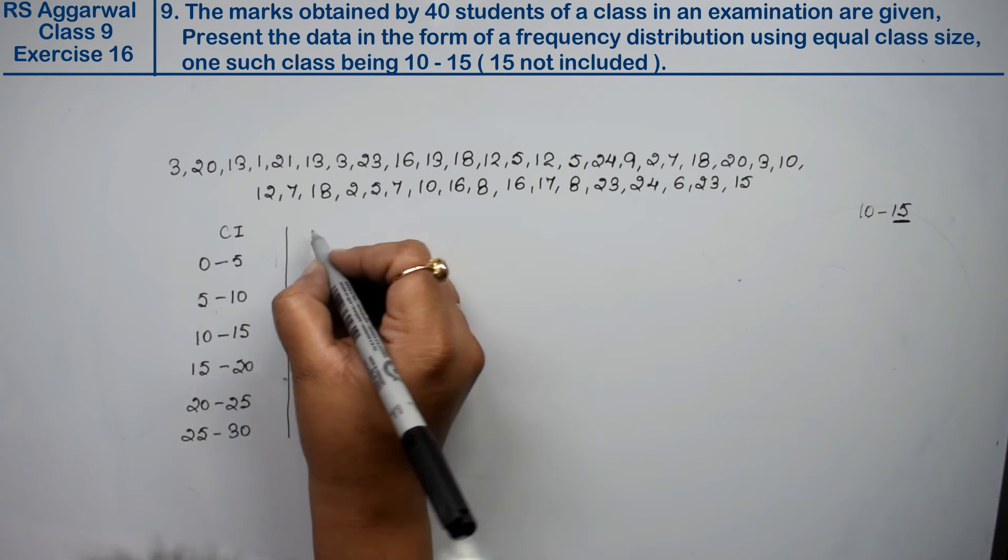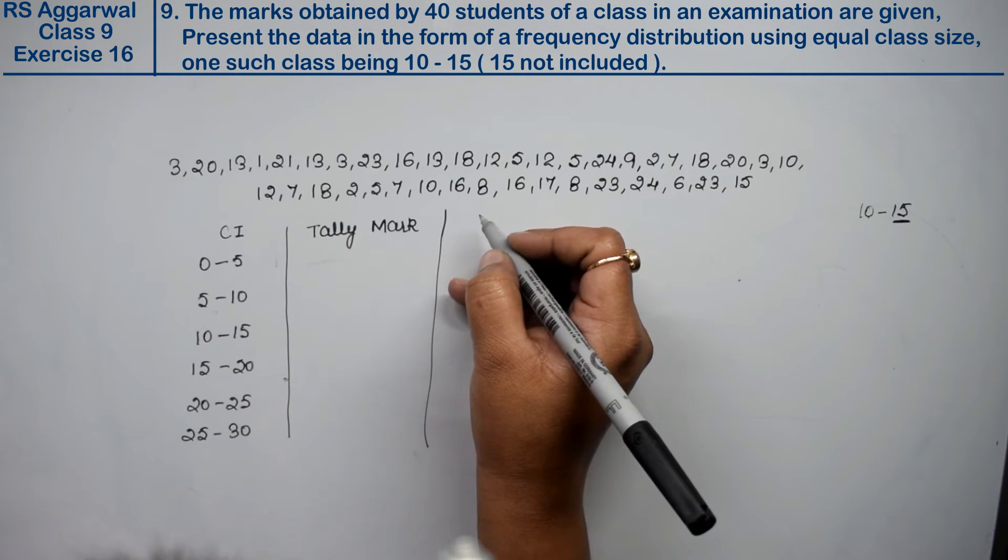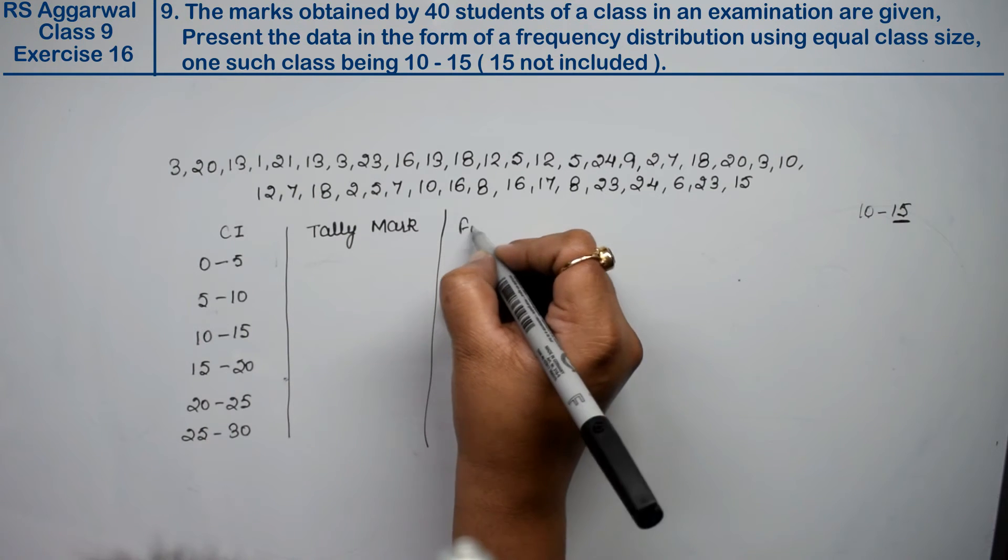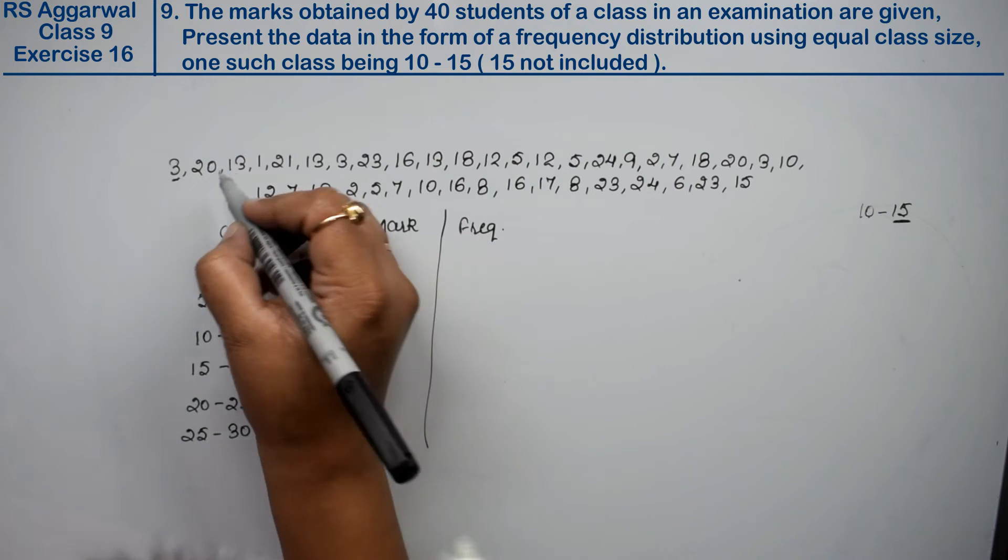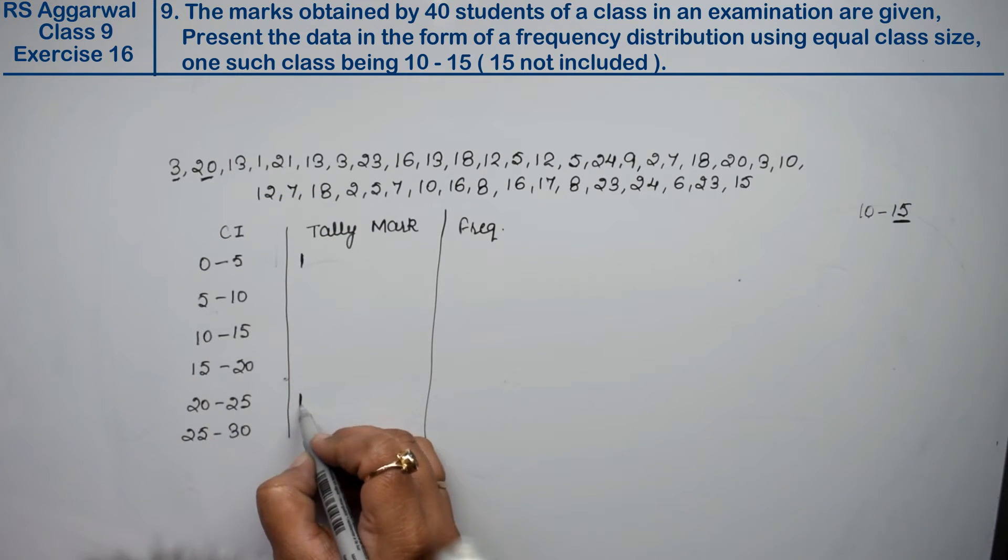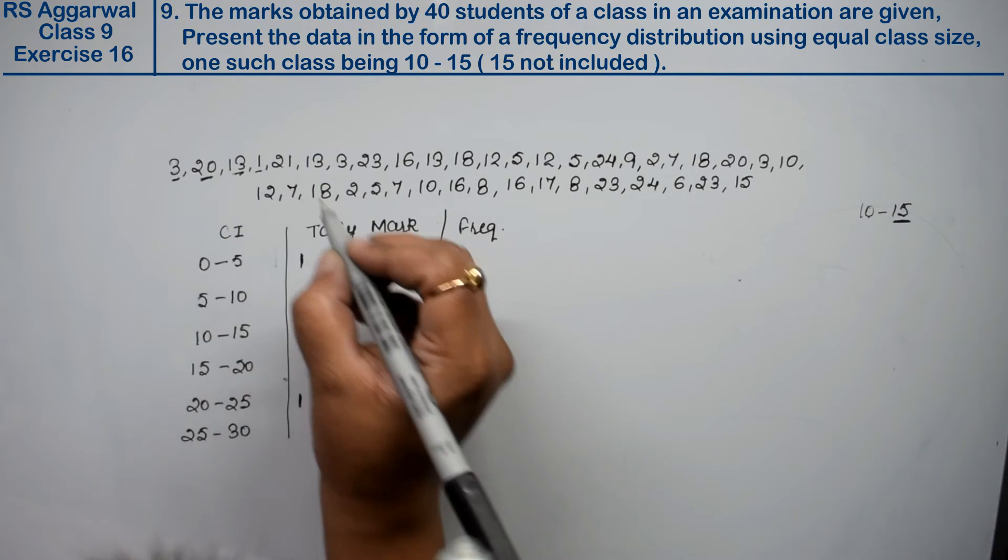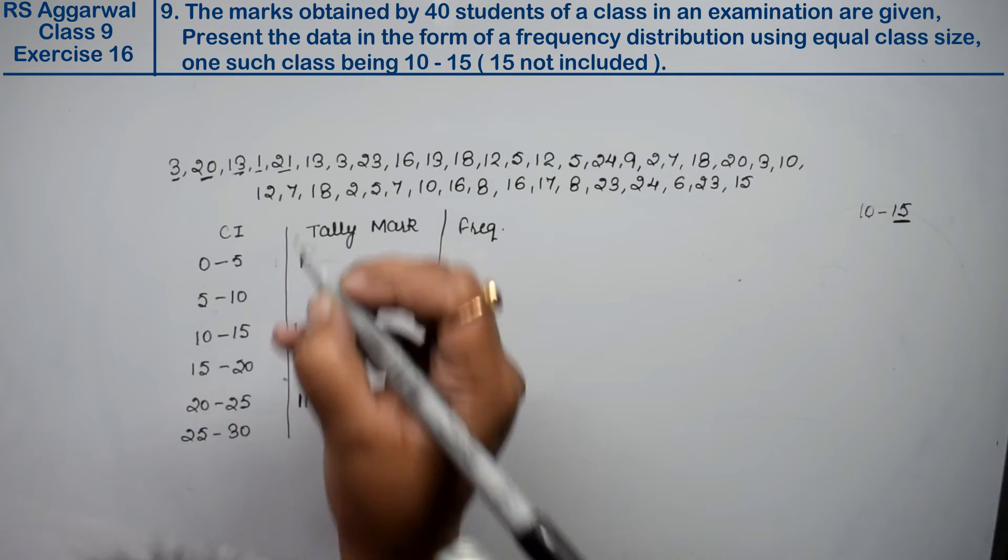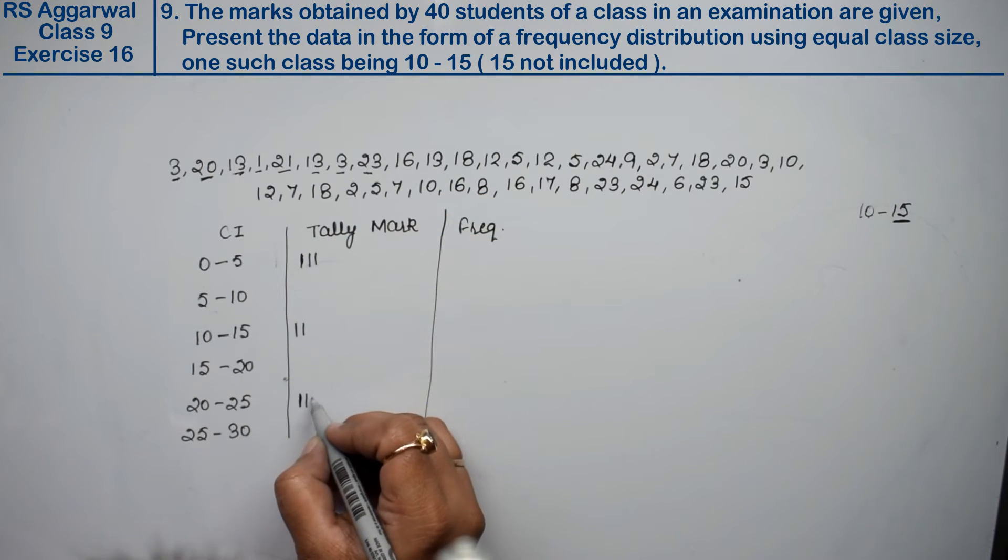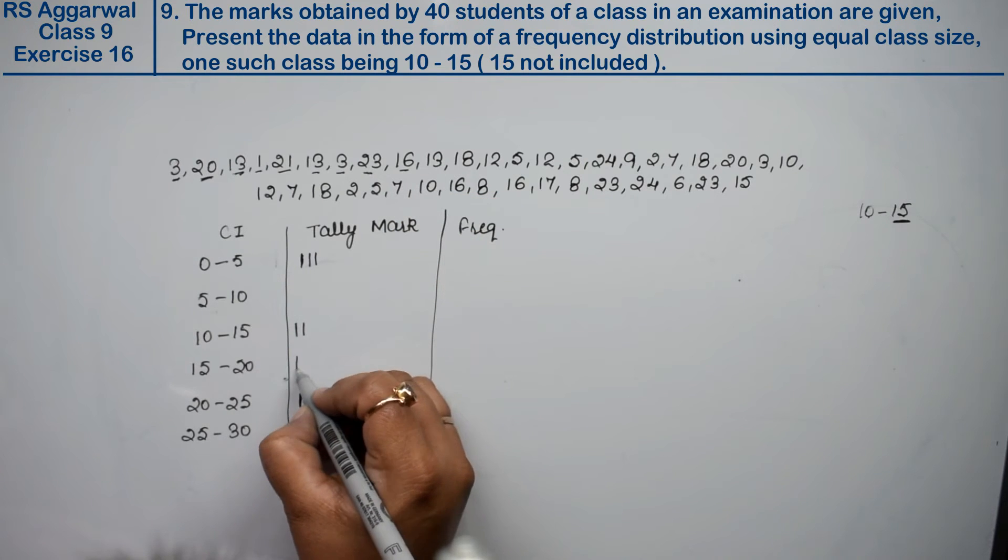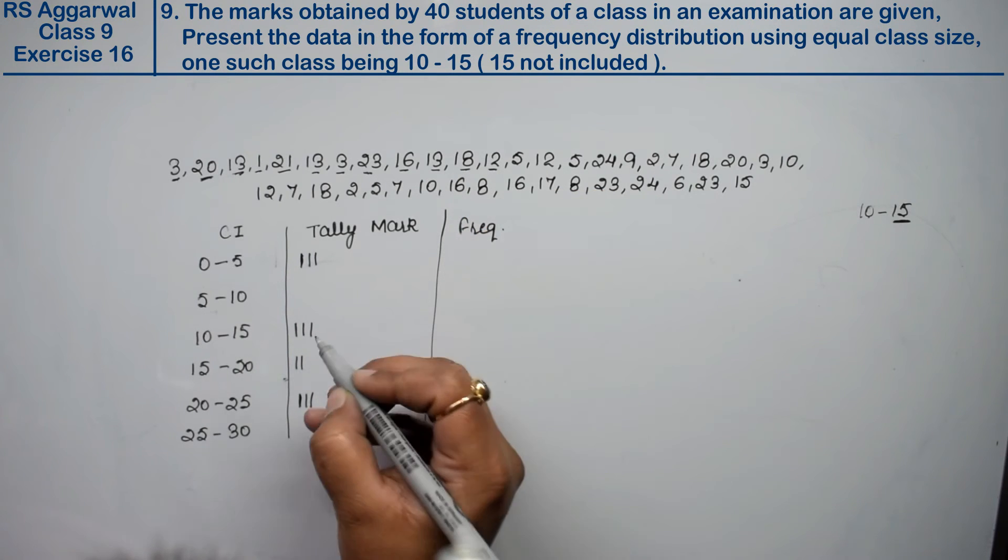Now we have tally marks and marks obtained or frequency columns. Let's start: first is 3, which goes in 0 to 5. Next is 20, which goes in 20 to 25. Then 13 goes in 10 to 15. Then 10 in 0 to 5. Then 21 in 20 to 25. Then 13 in 10 to 15. Then 3 in 0 to 5. Then 23 in 20 to 25. Then 16 in 15 to 20.